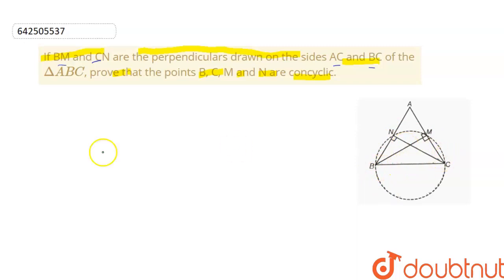Assuming that BC is the diameter, then we know that BC subtends 90 degree on M and N.